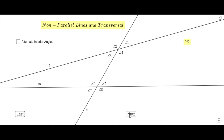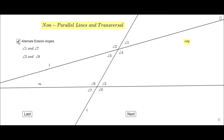The next slide talks about alternate exterior angles. These angles are exterior — one, two, seven, and eight — and each pair should have one angle on each side of transversal T. So the pairs are one and seven, and two and eight. Those are the alternate exterior angle pairs, and you can verify by clicking the box.